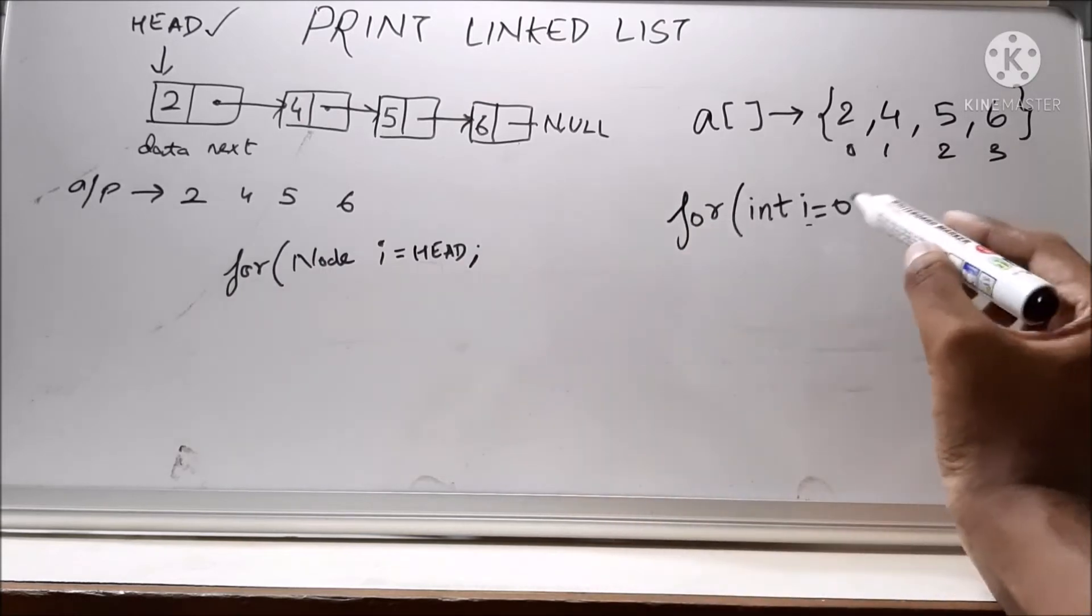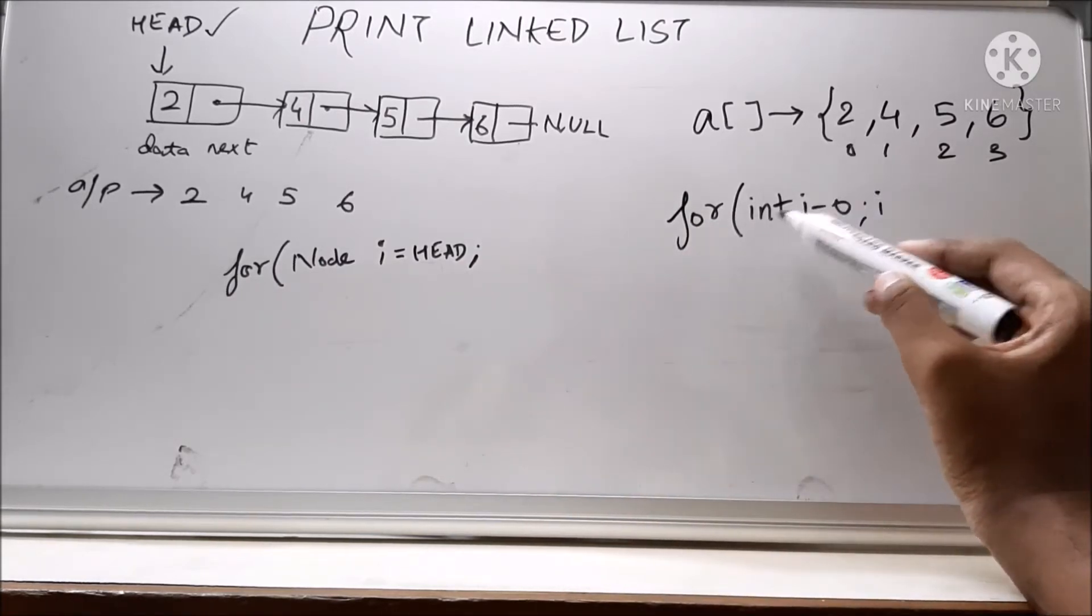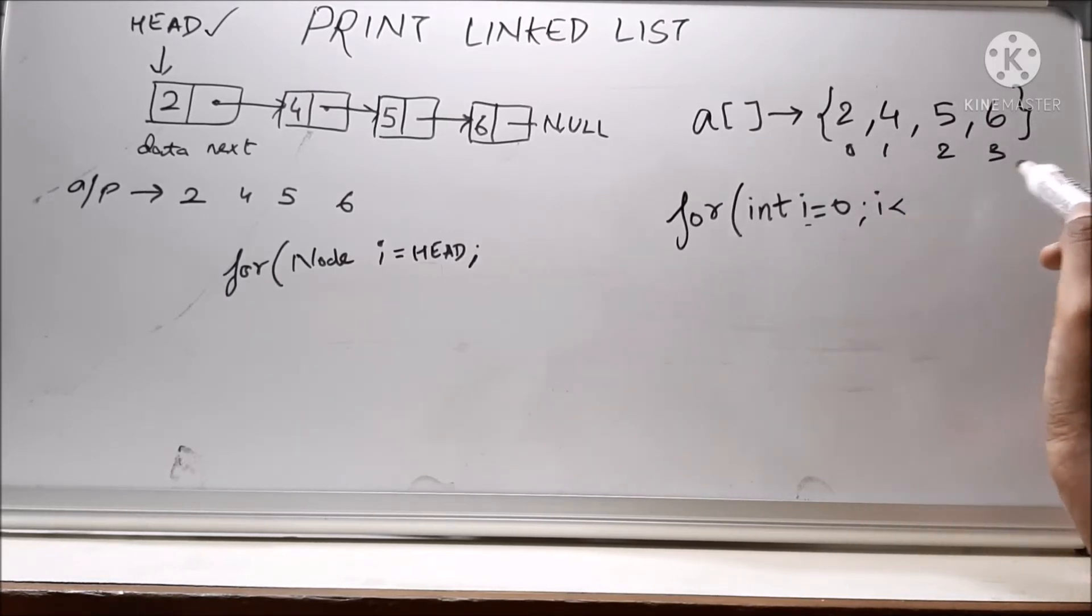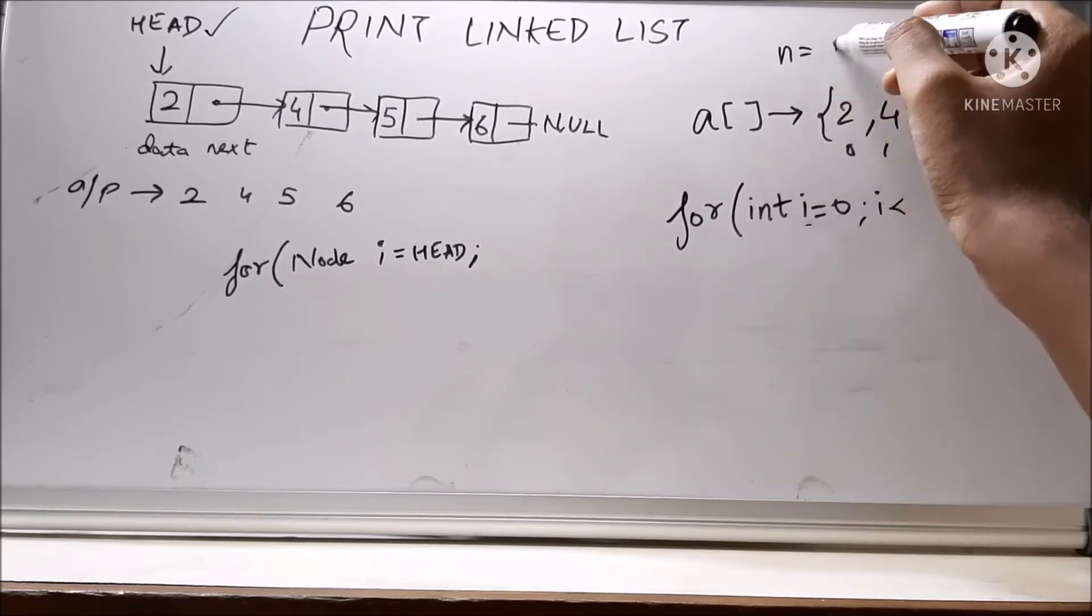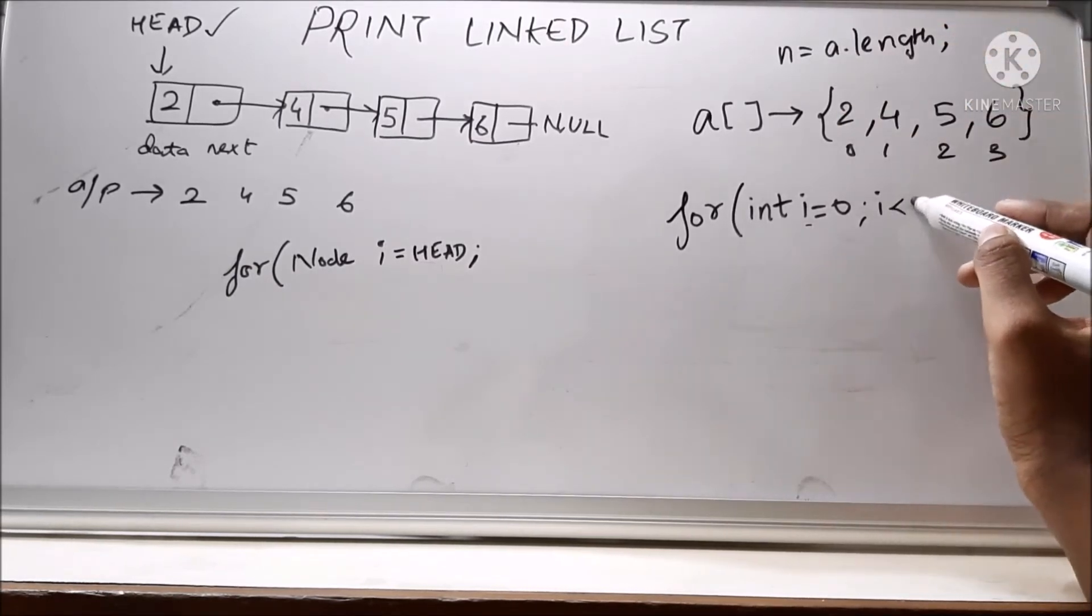What is the second part? So here we will give a condition of where it should stop. We will say that i should be less than this length of the array, right? So the length of the array is, let's say we have n as a dot length. So we will say i is less than n.